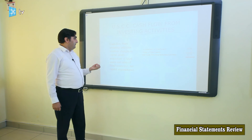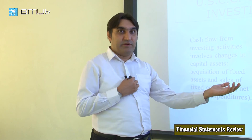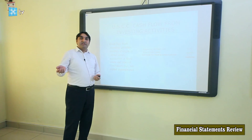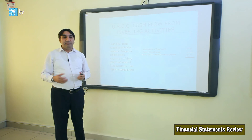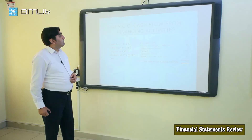The second part of the cash flow statement is cash flow from investing activities — that is, what fixed assets the company has acquired or sold during the period. Buying new fixed assets is a cash outflow and selling fixed assets is a cash inflow. The company has sold 25 million dollars of assets, and total cash flow from investing activities is negative 173 million, meaning the company has acquired more than it sold.